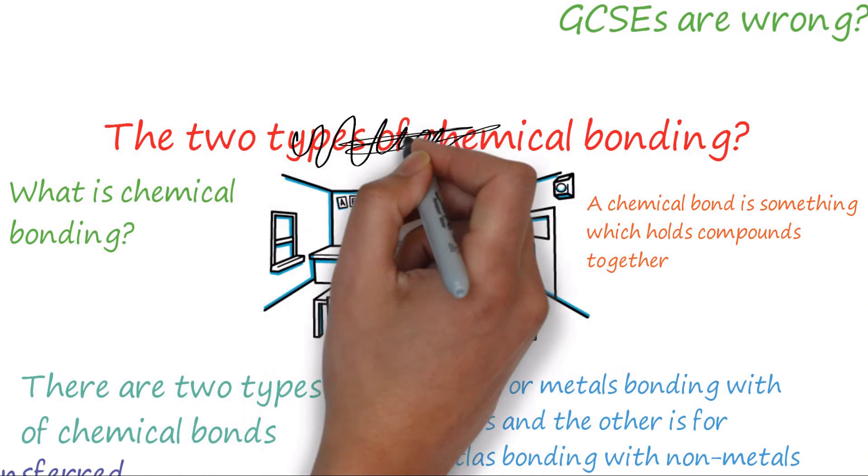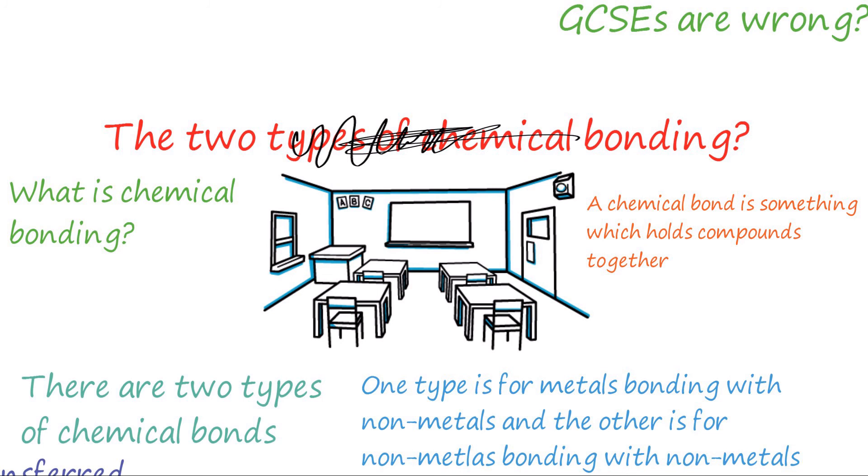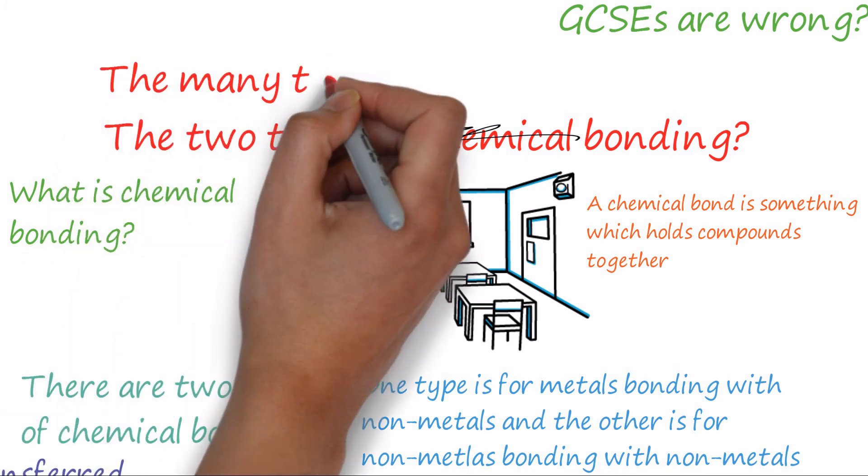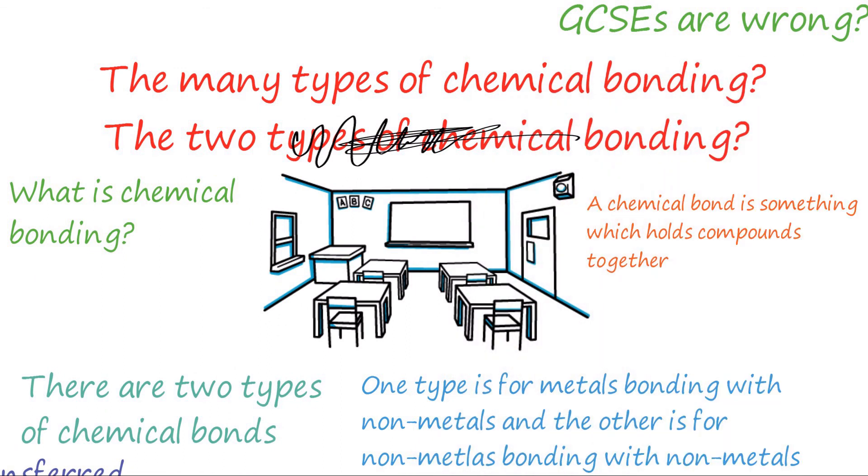This content is not part of your GCSEs, so don't learn it for them. It's been simplified to build up your knowledge slowly, but when we next think of chemical bonds we know that there are a lot more than just two. But don't go laughing at your teachers saying they're wrong. Imagine writing a 6 mark essay on electronegativity and how chemical bonds can be slightly covalent. Trust me, it wouldn't be good.